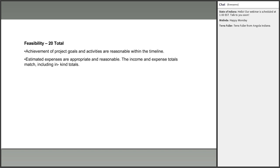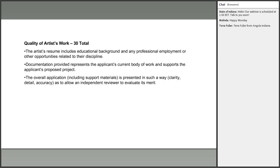We've developed a short video that helps you answer the community engagement questions in the application — I'll show you exactly where to find it shortly. The next criterion is feasibility: we want to know that you can achieve the project goals and activities reasonably within the timeline of this grant, that your estimated expenses are appropriate and reasonable, and that your income and expense totals match.